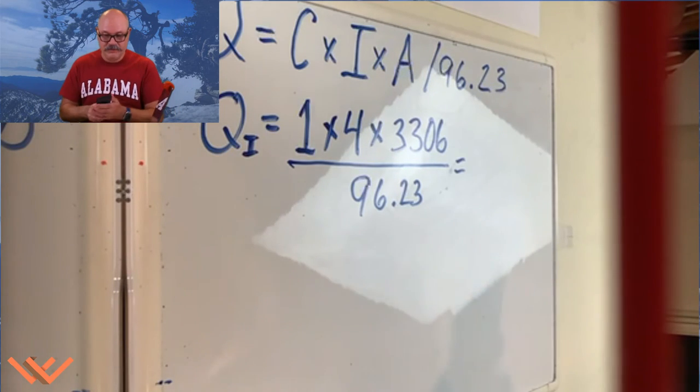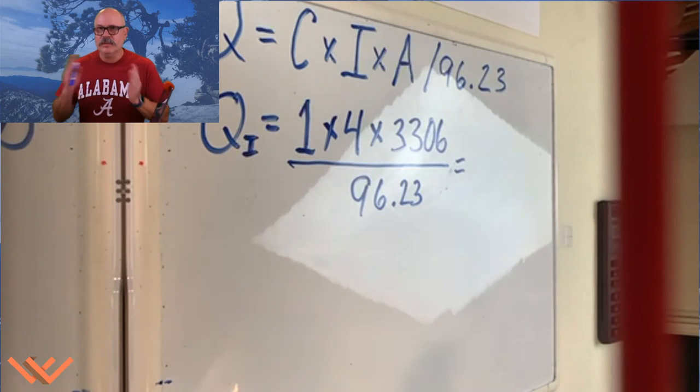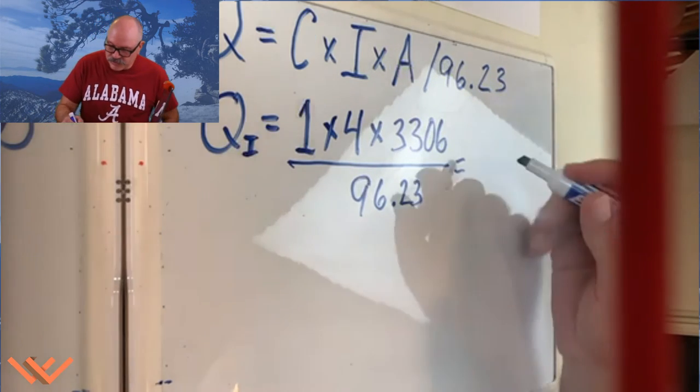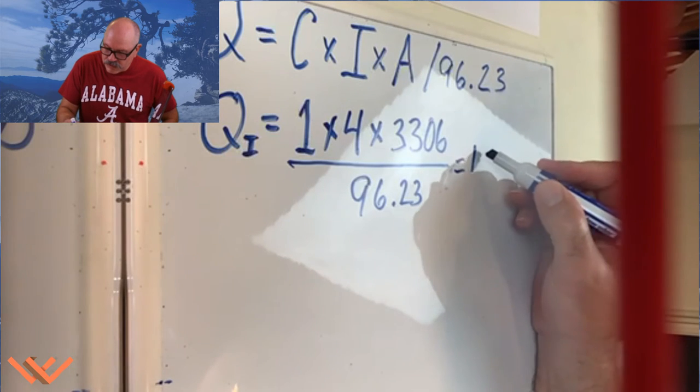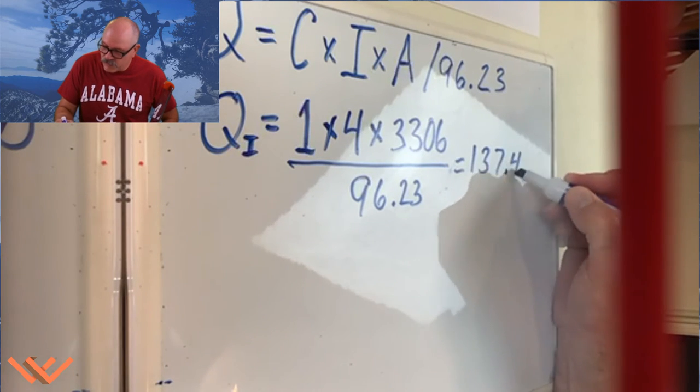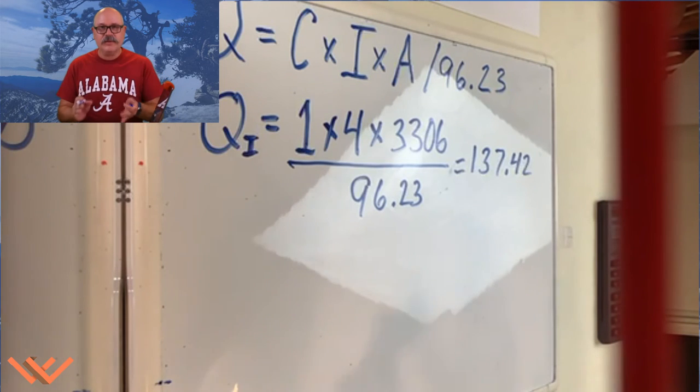Now what does that equal? Let's get out our calculator and figure it out. We don't need to multiply one by anything. It's one times anything, it's just itself, it's the identity. So four times 3,306, that's going to give me a value of 13,224 divided by 96.23 equals 137.420. I'm rounding to the hundreds, so I'm just going to do 137.42. So that's for the impervious.